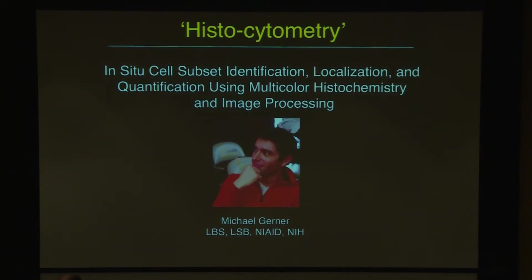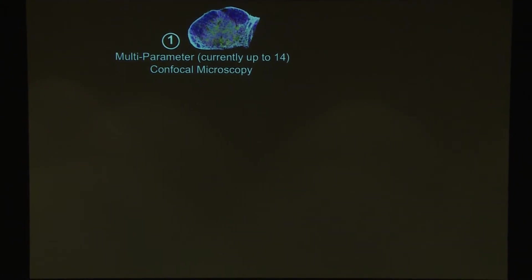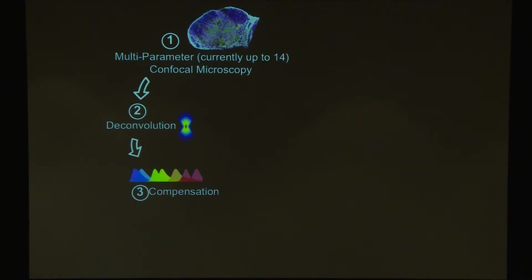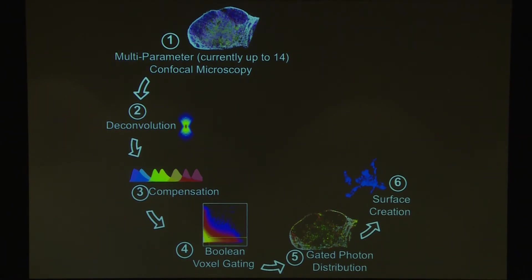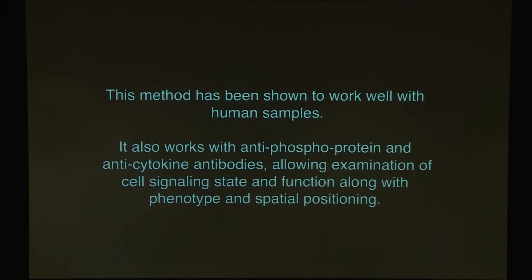I'll start with what we've done, but I'll also talk about other people's work. We decided we needed to get more complex in the tissue and more quantitative. So Mike Goerner spent years developing a method where we do staining directly on tissue sections in 14 or so parameters at a time. We can compensate within that just like you do for flow, create surface objects that retain all the fluorescence — basically flow data — and go directly into flow cytometry software to gate and get quantitative information. We keep X, Y, Z coordinates, so anything we gate we can identify in the tissue. This works with human samples, with antiphosphoprotein and anticytokine antibodies, so if you want to know cell state, you can get that information and relate it to transcriptional state — giving you function and phenotype.